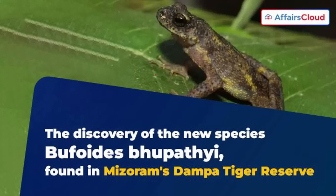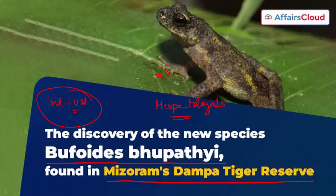Next, a new species of frog. Researchers from India and USA discovered a new species named Bufoides bhupathi. This species was found in Mizoram's Dampa Tiger Reserve. A herpetologist is a zoologist who specializes in the study of reptiles and amphibians. Amphibians are animals that can live both on land and in water.